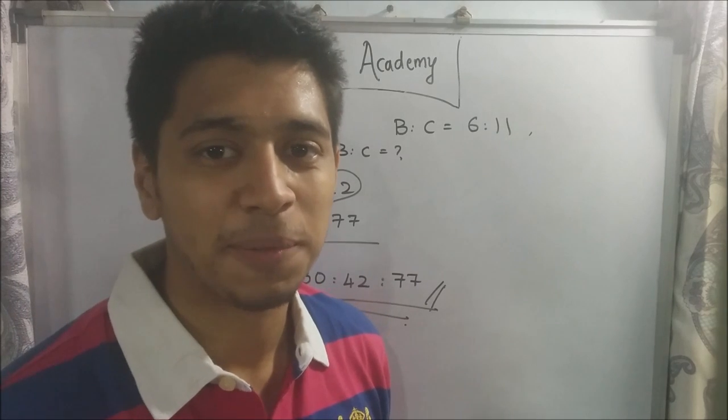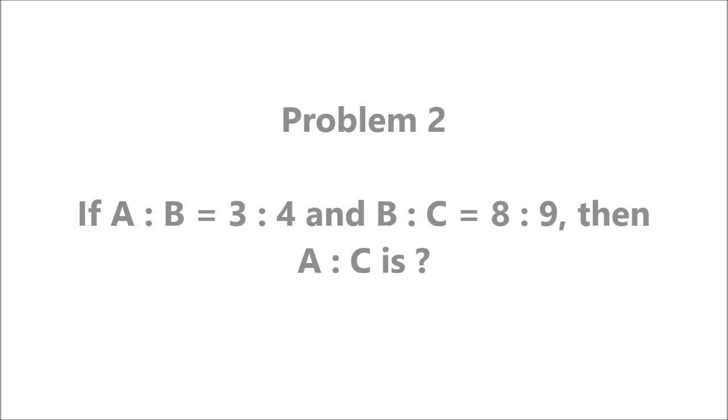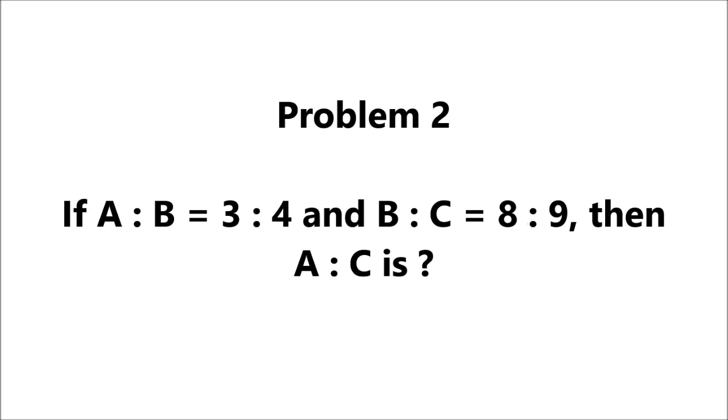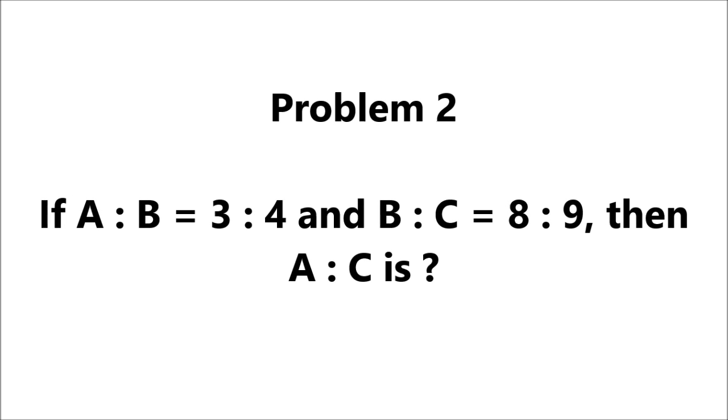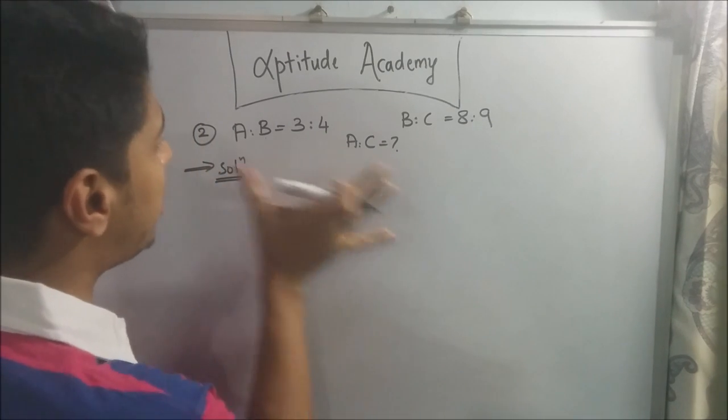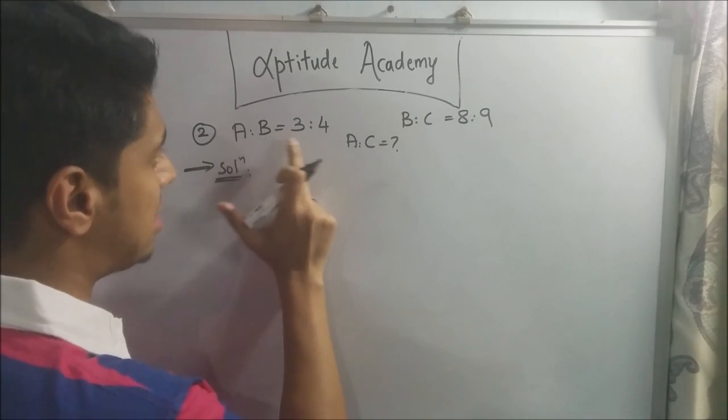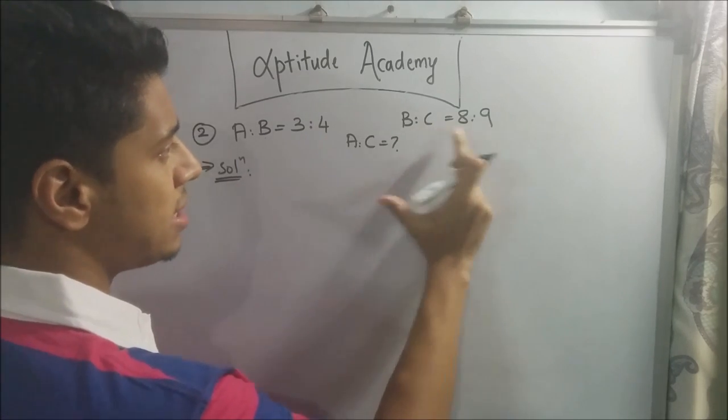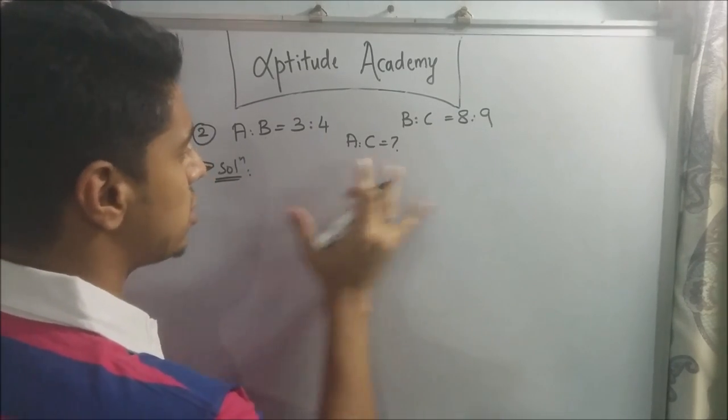Problem 2. If a is to b is equal to 3 is to 4 and b is to c is equal to 8 is to 9, then a is to c is? Alright. Now the second sum is pretty much like the first one. They've given you a is to b is equal to 3 is to 4 and b is to c is equal to 8 is to 9. They've asked you what is a is to c.